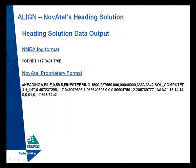The Novatel heading log is logged at the rover receiver and contains the standard Novatel log header, the solution status, position type, the baseline length between the master and rover, the heading of the rover relative to the master, the pitch of the rover relative to the master, and standard deviations of those measurements. It also includes a master receiver station ID and the number of satellites tracked and used in the solution.